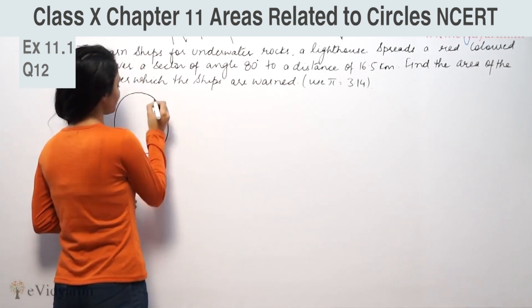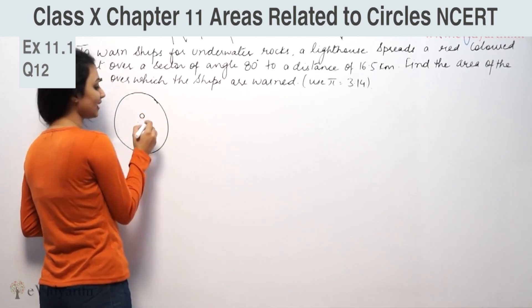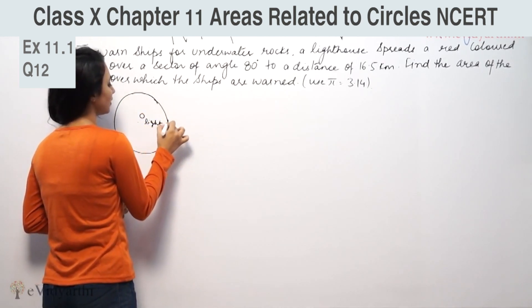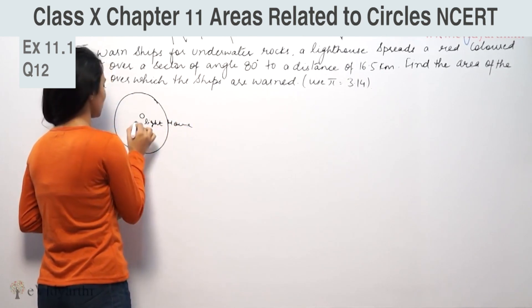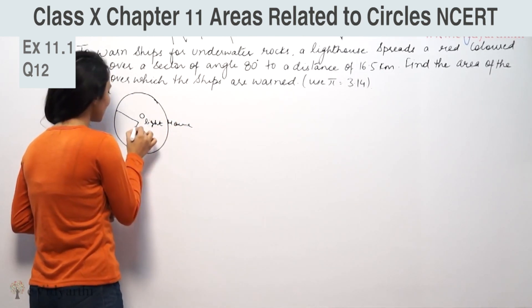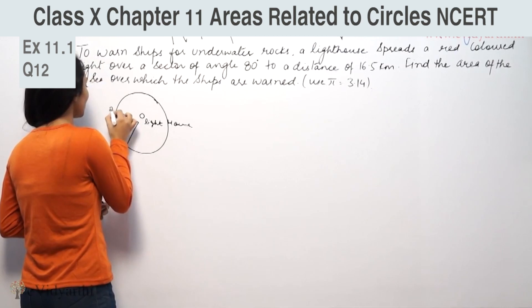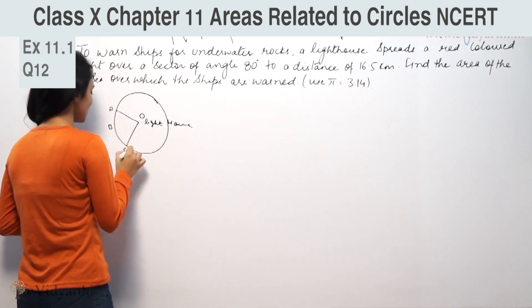So this is the circle. This is our center. Let's suppose the lighthouse here. Here is our lighthouse. This is just the area of light. Let's suppose this is A, this is B, and this is C.